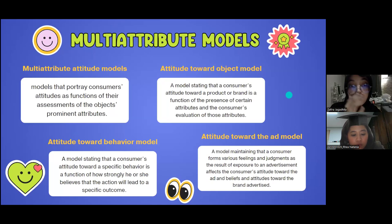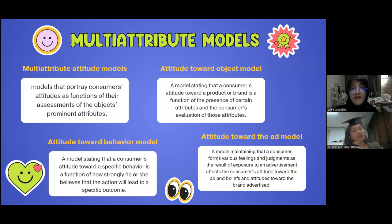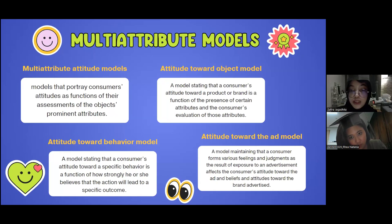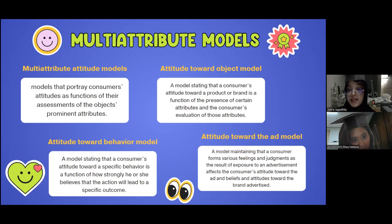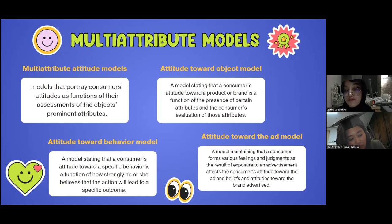Next is multi-attribute models. Multi-attribute attitude models portray consumers' attitudes as a function of their assessment of an object's prominent attributes. The attitude-toward-object model states that a consumer's attitude toward a product or brand is a function of the presence of certain attributes and the consumer's evaluation of those attributes. The attitude-toward-behavior model states that a consumer's attitude toward a specific behavior is a function of how strongly they believe the action will lead to a specific outcome. The attitude-toward-the-ad model maintains that consumers form feelings and judgments from exposure to an advertisement, which affect their attitude toward the ad and beliefs and attitude toward the advertised brand.